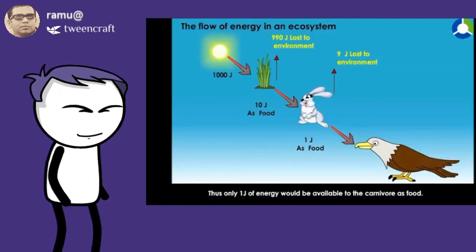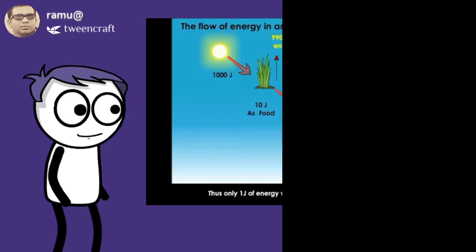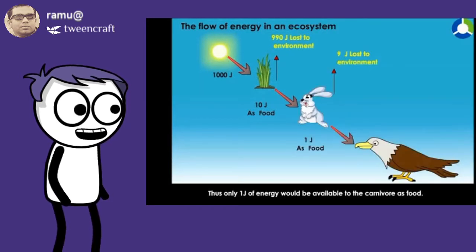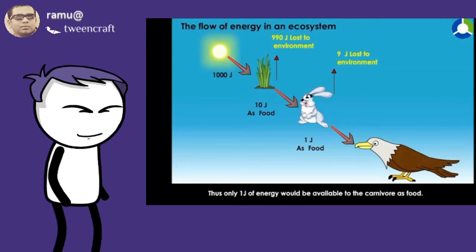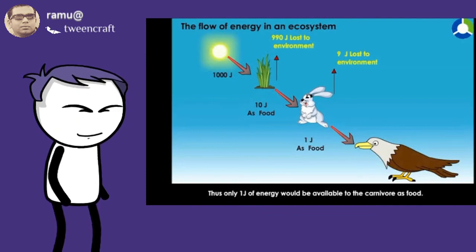Green plants produce their own food. Herbivore animals eat green plants as their food, which means the energy obtained by the green plants is transferred to the herbivores. The carnivore and omnivore animals eat herbivore animals, so the energy from herbivores is transferred to the carnivore animals.